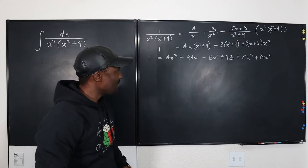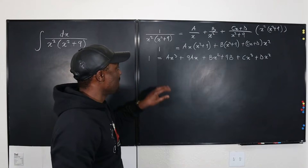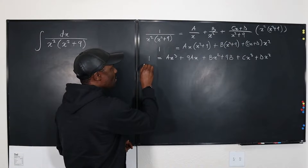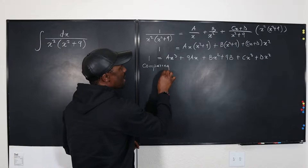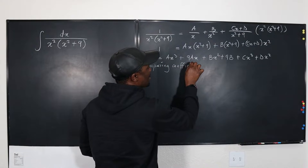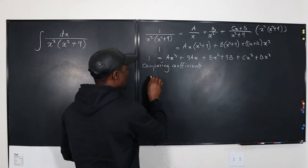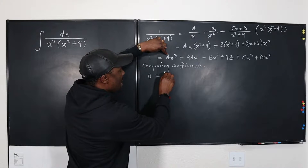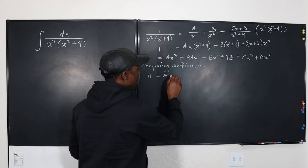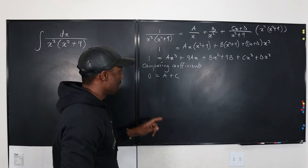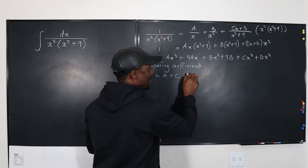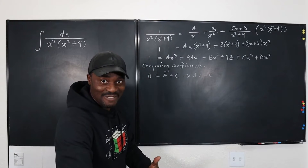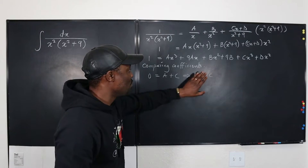So how do we solve this? Let's start from the most obvious — comparing coefficients. What is the highest degree of x on the left side? There's no x, so the coefficient is zero. The coefficient of x cubed on the right is a plus c. So a plus c equals zero, which means a equals negative c. As soon as I get a, I get c because c just has the opposite sign. I don't know what a is yet, so I'll keep that.